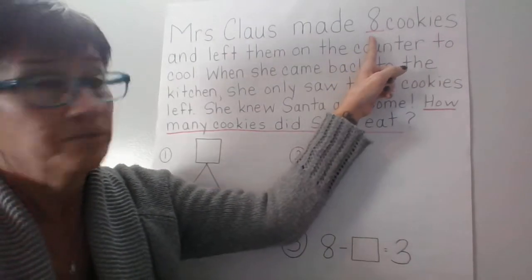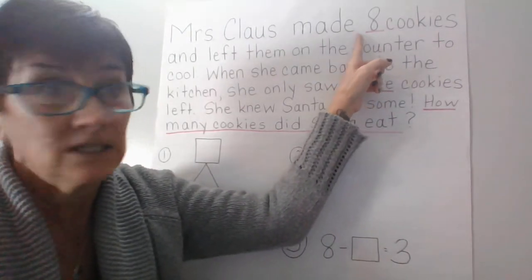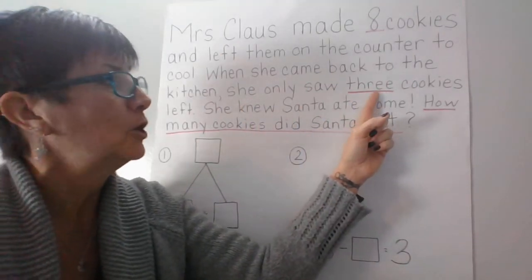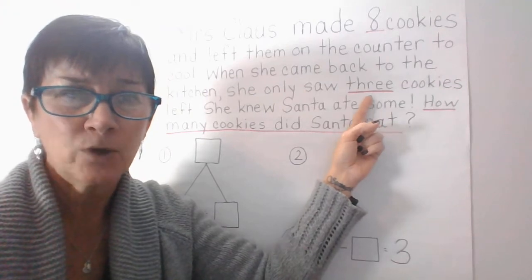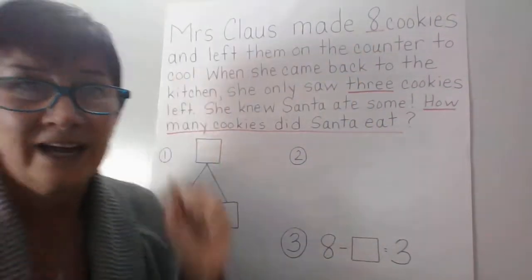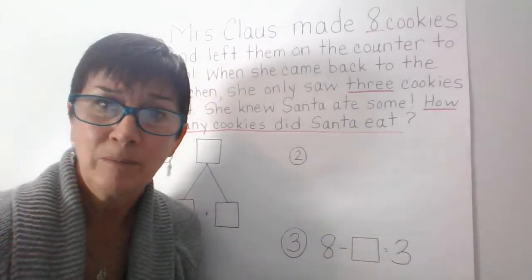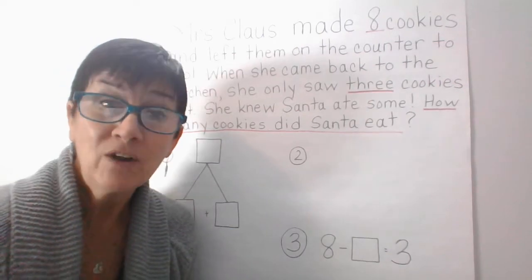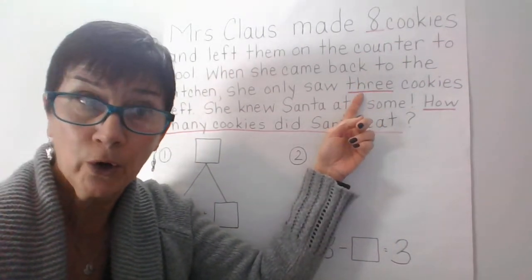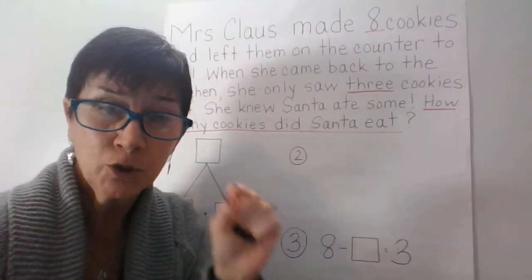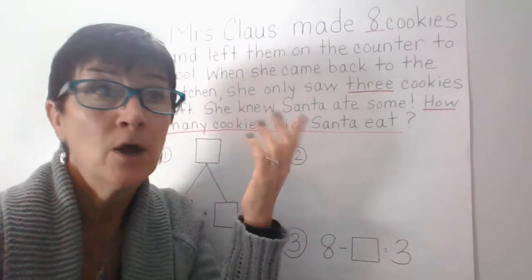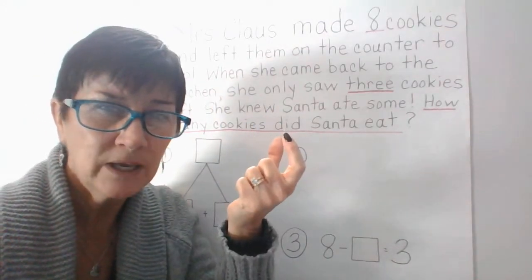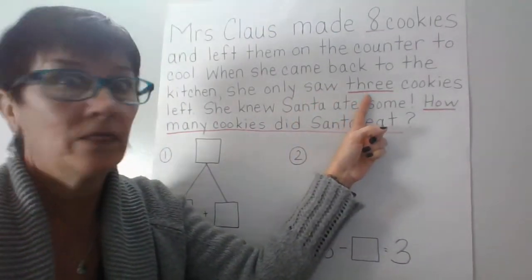Mrs. Claus made eight cookies — I underlined the number eight to show that's the number in our story problem. When she came back to the kitchen, she only saw three cookies. Can anybody tell me how this underlined word 'three' is different from the underlined 'eight'? They're both telling us how many but they're a little bit different. The number three is written as a word and the number eight uses a numeral. Sometimes in story problems we have to be super duper detectives because numbers can be spelled using letters, so we have to be extra smart detectives to find the number hidden inside the word.